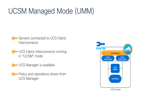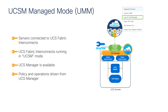Next up, we'll look at UCSM Managed Mode or UMM. There are a couple key things to point out. The servers are connected to a pair of fabric interconnects configured in UCSM mode, which means UCS Manager is running on the pair of fabric interconnects and is available. Because UCS Manager is available, the policy and operations are driven from and owned by UCS Manager. UMM is really the mode that UCS has operated in mostly since its inception. We can still claim a UMM domain into Intersight, allowing you to aggregate management across multiple UMM domains and perform some lifecycle operations — things like launching KVM, upgrading firmware, and cross-launching UCS Manager. However, an administrator would still need to launch UCS Manager to configure and deploy servers and perform various other functions.